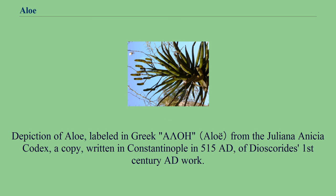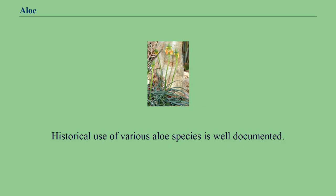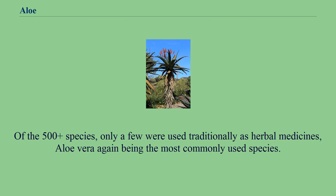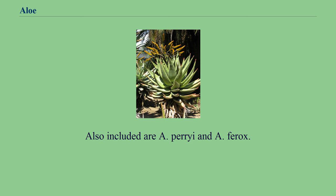A depiction of aloe, labeled in Greek Alpha Lambda Omicron Aida, appears in the Juliana Anicia Codex, a copy written in Constantinople in 515 AD of Dioscorides' 1st century AD work. Historical use of various aloe species is well documented, though documentation of clinical effectiveness is available but relatively limited. Of the 500-plus species, only a few were used traditionally as herbal medicines, with aloe vera being the most commonly used, along with A. perryi and A. ferox.